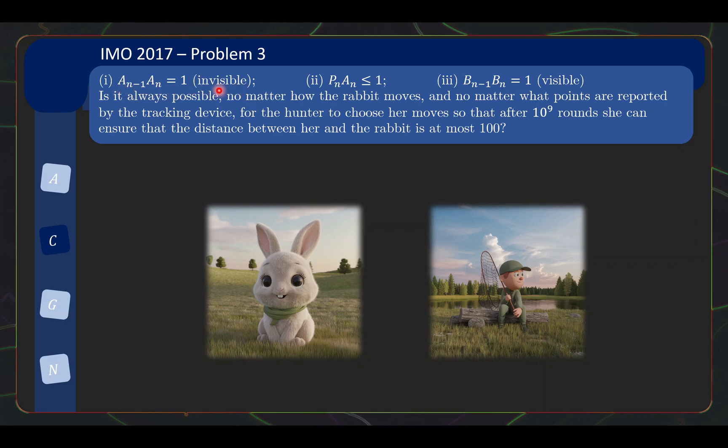Next, a tracking device will report a point PN to the hunter. The only guarantee provided by the tracking device is that the distance between PN and AN is at most 1. And lastly, the hunter then moves visibly to a point BN such that the distance between BN-1 and BN is exactly 1. So it's quite a mouthful but it's very logical. Let me just summarize it. So on each turn, the rabbit moves invisibly by a distance of 1. Then a tracking device will ping where the rabbit is except it's not exactly accurate. It's only accurate up to a distance of at most 1. And then the hunter will decide, will make a move by moving a distance of exactly 1. So we are supposed to consider the following question. Is it always possible, no matter how the rabbit moves and no matter what points are reported by the tracking device, for the hunter to choose her moves so that after 10 to the 9 rounds, she can ensure that the distance between her and the rabbit is at most 100. So this is quite an interesting question.